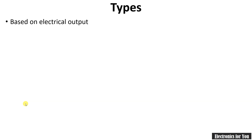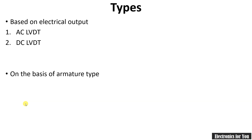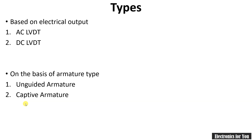So let's see which are the types of LVDT based on the electrical output. Whether it is AC or DC, the LVDT is classified into AC LVDT and DC LVDT. Similarly, on the basis of armature type, the LVDT is classified into unguided armature LVDT, captive armature LVDT, and spring extended armature LVDT.